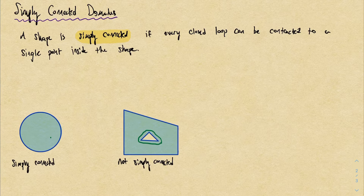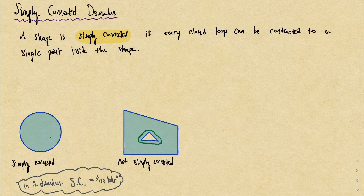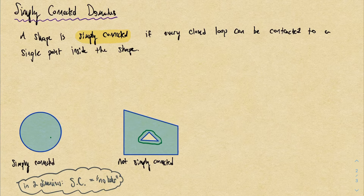After seeing examples like this, it's tempting to think simply connected just means no holes. This is sort of true in two dimensions — for two-dimensional blobs, simply connected does genuinely mean no holes. But I wouldn't think about it that way, because things get more complicated with higher-dimensional shapes.